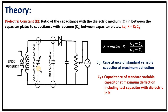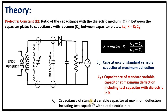As soon as you insert the test capacitor, the capacitance of the circuit increases and you have to reduce the value of the variable capacitor. The amount of reduction is the value of the capacitance of the test capacitor. C2 is the capacitance of the variable capacitor at maximum deflection with the test capacitor including the dielectric medium. Similarly, C3 is measured with the test capacitor but without the dielectric medium.